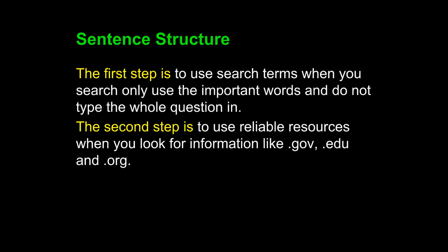Let's take a look at them by themselves. 'The first step is to use search terms when you search. Only use important words and do not type the whole question in. The second step is to use reliable resources when you look for information like .gov, .edu, and .org.' These two sentences suffer from the same problem. First, a weak subject — 'step' is the subject of your sentence. The focus of this paragraph is research and specifically the researcher, so the most important noun in any sentence should be 'you' — the reader, the researcher — not the word 'step.'